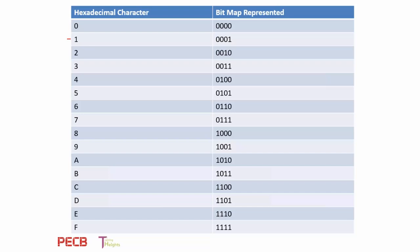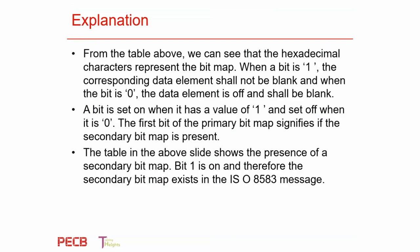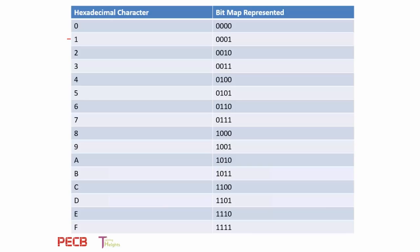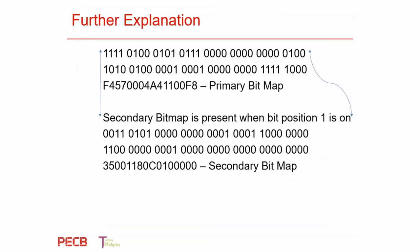If you're using hexadecimal, it's got to correspond to the bitmap representation. If a bit is set on, it has a value of one. When it is off, it has a value of zero. The first bit of the primary map signifies if the secondary bitmap is present or not. You can see the primary bitmap and the secondary bitmap, and the direct translation from one to the other, whether you're doing it in hexadecimal or normal bitmap — it's just a direct conversion based on the table.